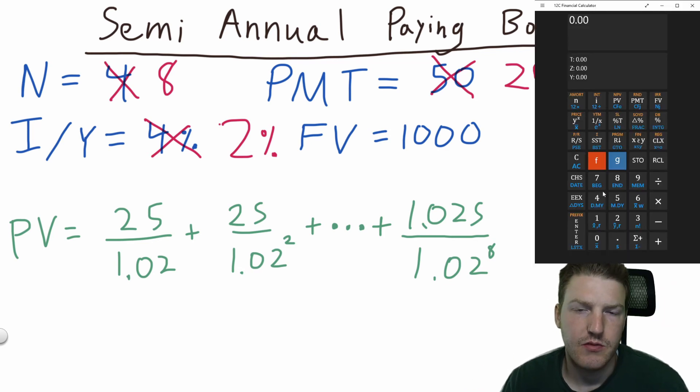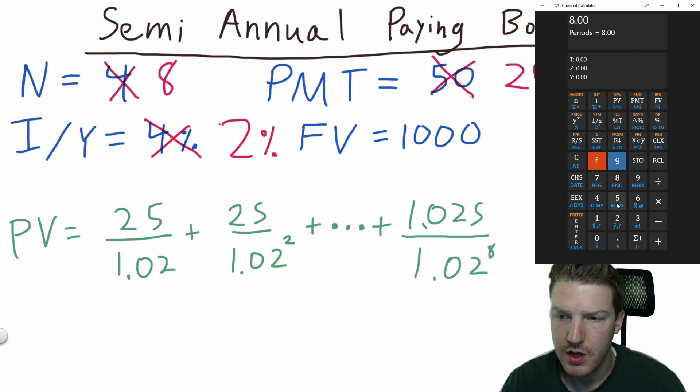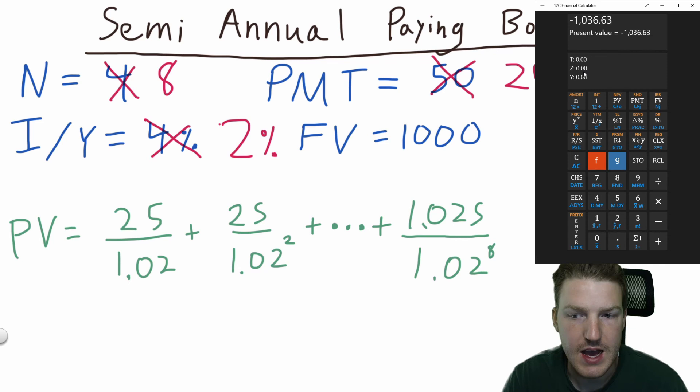Let's just make it easier on ourselves this time to find the present value and use a financial calculator. So we're going to put eight for the period, 25 for the payment, 2% for the interest per year, 1000 for future value. And we will compute the present value and find that it's $1036.63. Now, if you have a TIBA2 calculator, you can do the exact same thing in the same order.